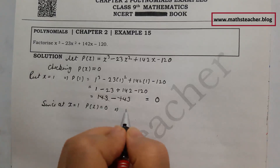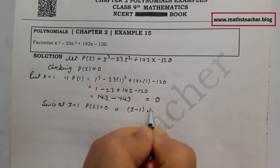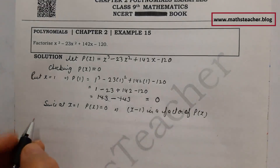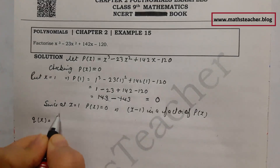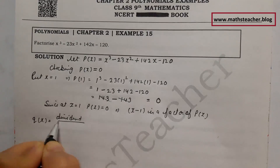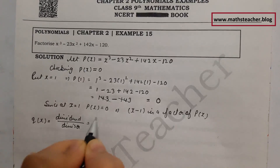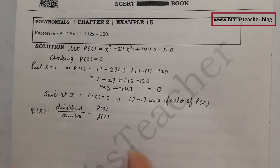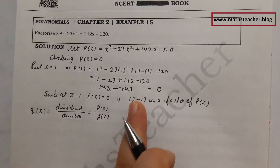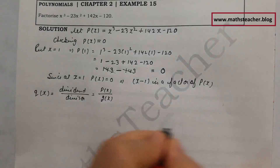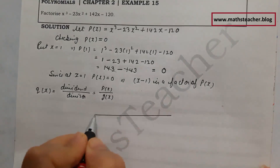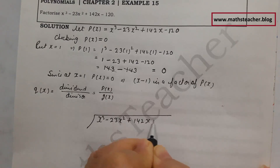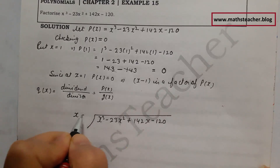Now add: 142 plus 1 is 143, and 23 plus 120 is 143, so 143 minus 143 equals 0. Since p(1) = 0, x minus 1 has become a factor of p(x). Now we need the quotient: dividend p(x) divided by divisor g(x) gives q(x). So now find q(x) = p(x) divided by (x minus 1). Let's set up the long division: x cube minus 23 x square plus 142 x minus 120, divided by x minus 1.